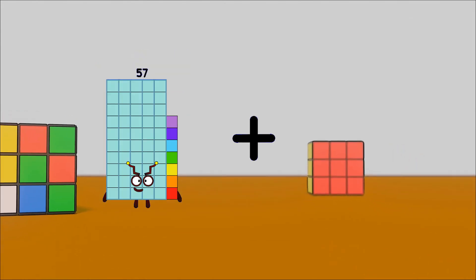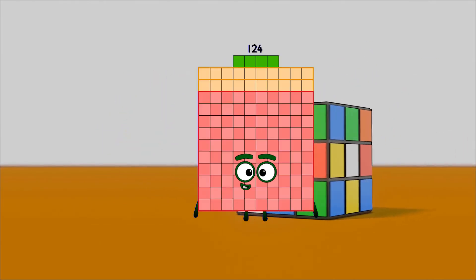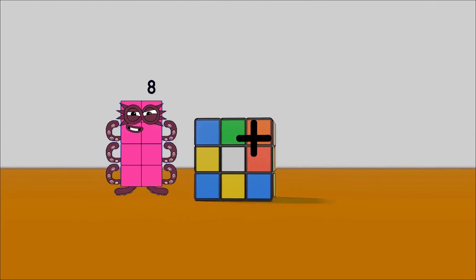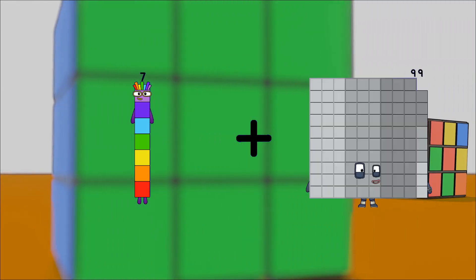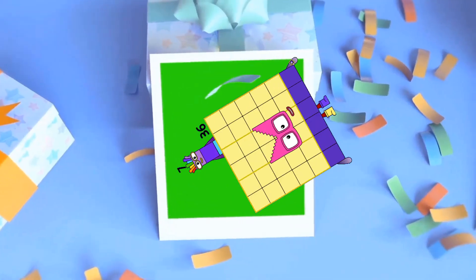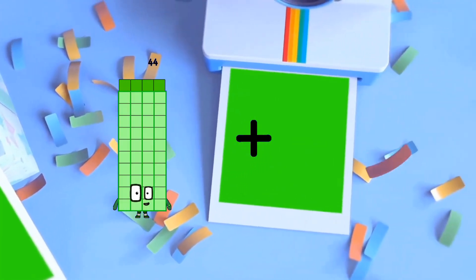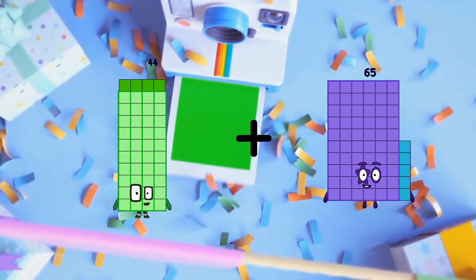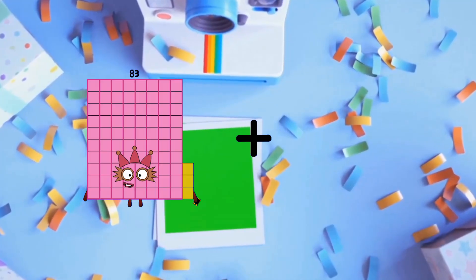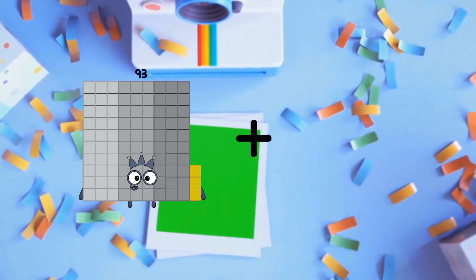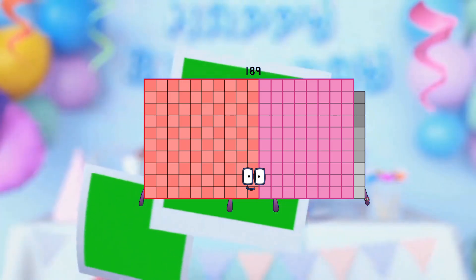57 plus 67 equals 124. 7 plus 36 equals 43. 44 plus 94 equals 138. 93 plus 96 equals 189.